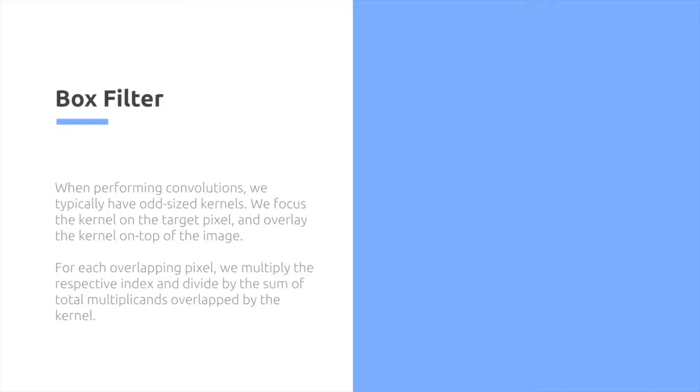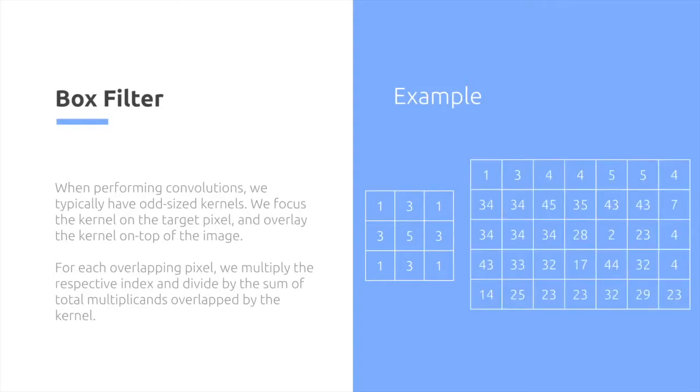Slightly makes no sense, so let's dive into an example. We're going to have a kernel, which here is a 3x3 matrix. This is the kernel, and then we're going to have our image, which is a series of different pixels.